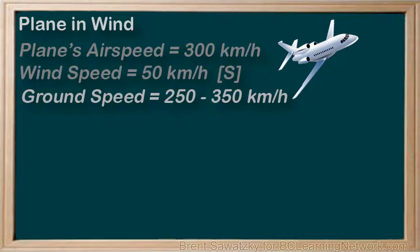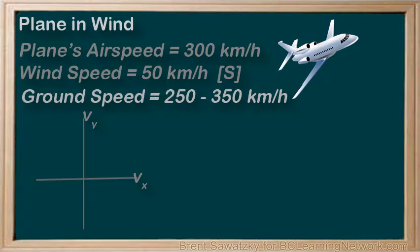In every scenario considering this plane, we can consider two components of the velocity: the north-south component and the west-east component. Let's call them Vx and Vy to align with our Cartesian coordinates.